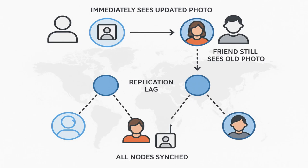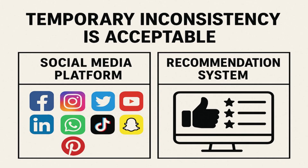You immediately see the new updated photo on your profile because you are connected to the same node which has the updated data. But a friend on the other side of the world might see your old photo for a few seconds due to replication lag. After all the nodes are synced, everyone sees the updated photo. This temporary inconsistency is acceptable in certain systems like social media platforms, where it is okay to see slightly outdated data for the sake of availability and fault tolerance.